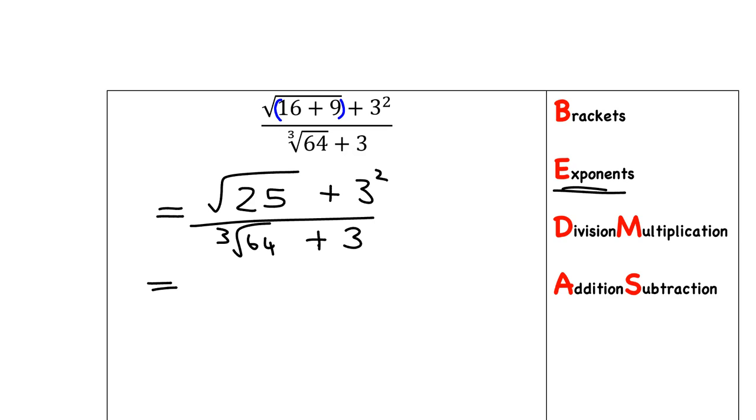Next, I need to deal with exponents. And exponents include square roots and cube roots and things like that. Okay, so the square root of 25, that is 5 and 3 squared is 9. The cube root of 64 is 4 and we've got 3. Now we need to deal with the top and deal with the bottom of the fraction. So we get 5 plus 9 is 14. 4 plus 3 is 7 and 14 over 7 gives me 2.